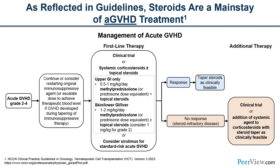When thinking about overarching treatment guidelines for both acute and chronic graft-versus-host disease, one key similarity is that corticosteroids are considered the standard first-line treatment. According to NCCN guidelines, when a patient develops acute graft-versus-host disease grade 2 to 4 — more clinically involved disease — beyond staying on preventative or maintenance immunosuppressive therapies, this would be a time to start systemic treatment.